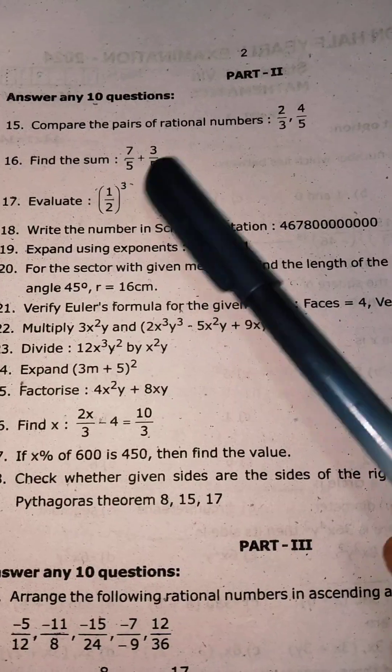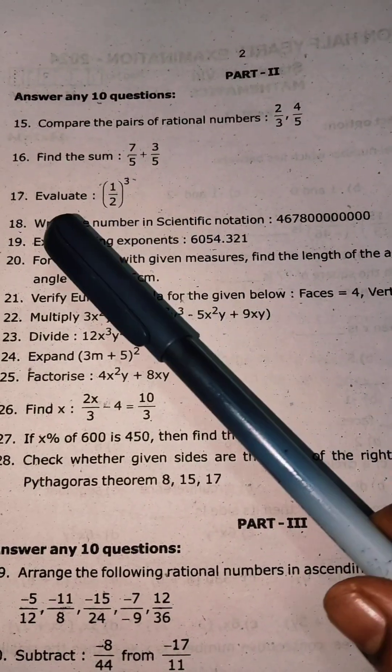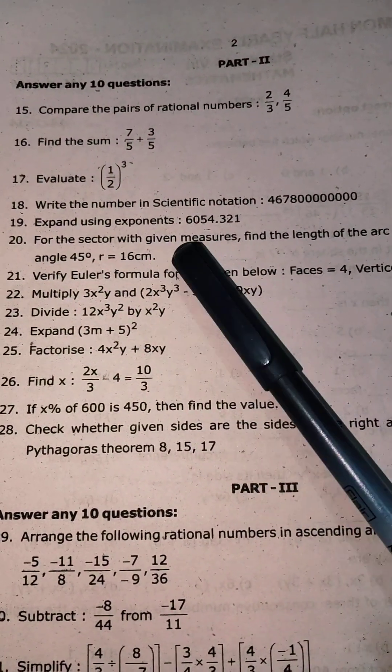Two marks. First, let's take a print out. Compare the pairs of rational number. Find the sum. Evaluate. Write the number in scientific notation. Expand using exponents.